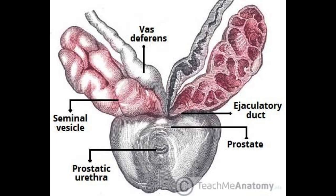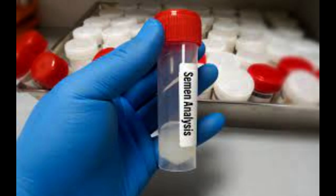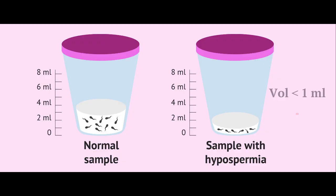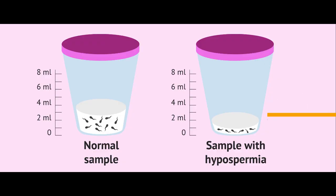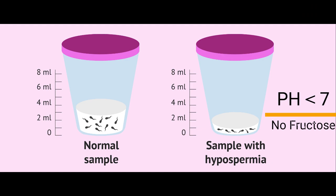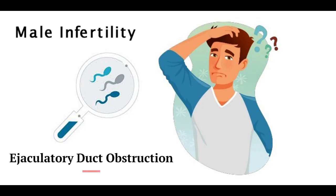Ejaculatory duct obstruction is suggested by finding enlarged, palpable seminal vesicles on rectal examination. An ejaculate volume less than 1 milliliter and a semen pH less than 7 that contains no sperm or fructose is suggestive of ejaculatory duct obstruction.